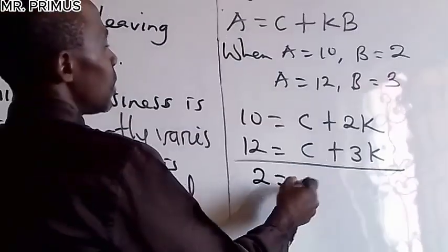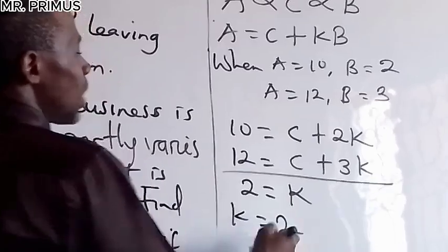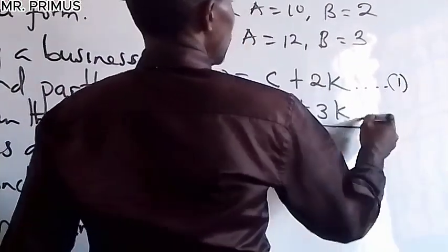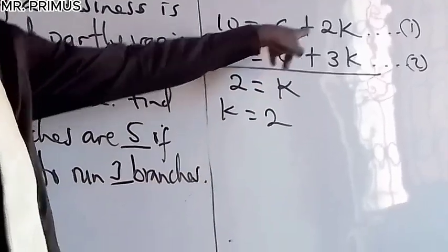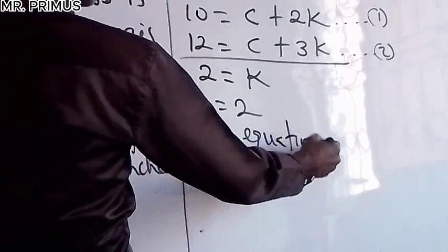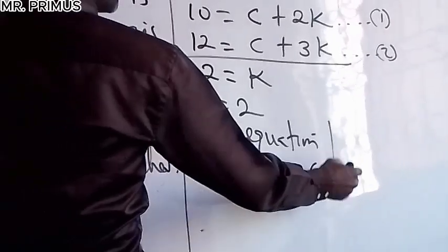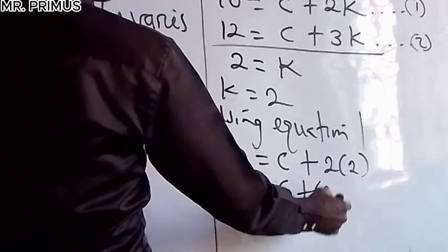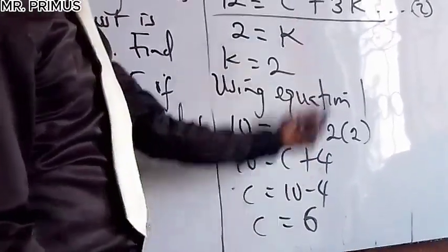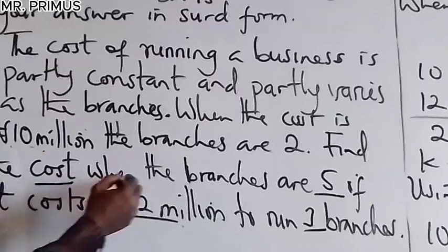Using the elimination method — subtract equation 1 from equation 2: (12 − 10) = (c − c) + (3k − 2k), giving 2 = k. So k = 2. Substituting k = 2 back into equation 1: 10 = c + 2(2) = c + 4, so c = 10 − 4 = 6.